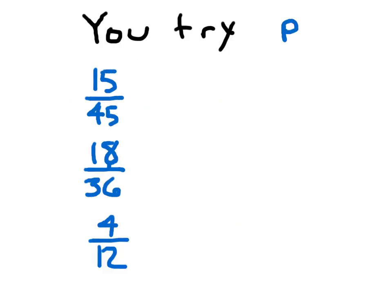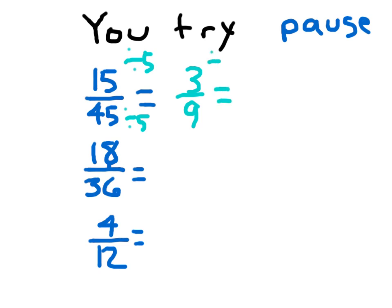Time for you to try. Copy these down and hit pause to be able to solve them, please. For that first problem, you might have noticed they both end with 5, so I'll divide both by 5. 15 divided by 5 is 3, and 45 divided by 5 is 9, giving us 3/9. However, that is not in simplest form, because those are still both divisible by 3. 3 divided by 3 is 1, and 9 divided by 3 is 3. So 15/45, in simplest form, is 1/3.